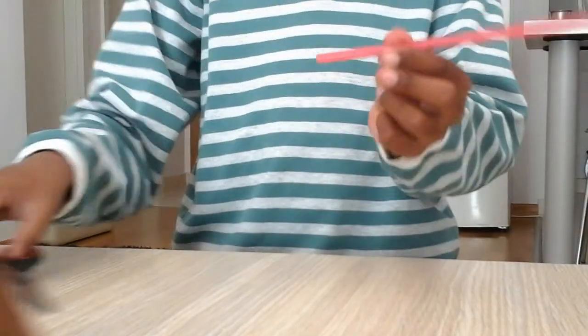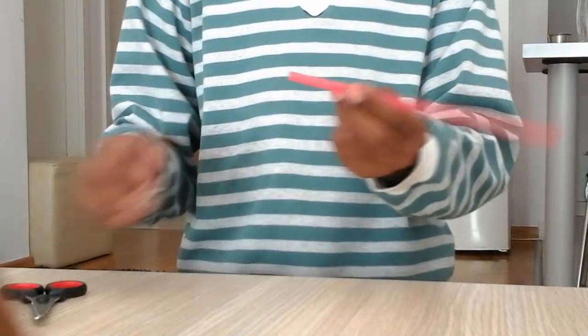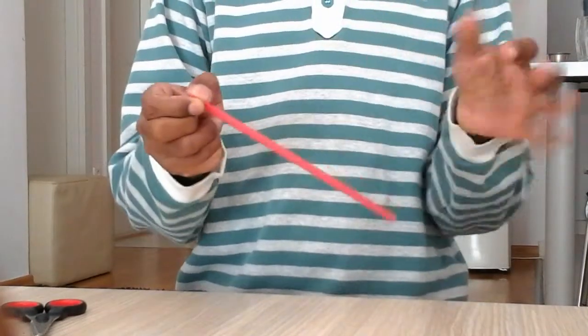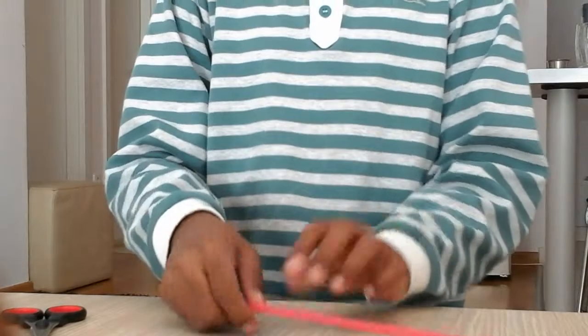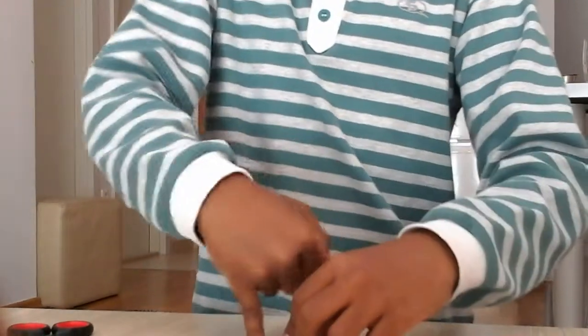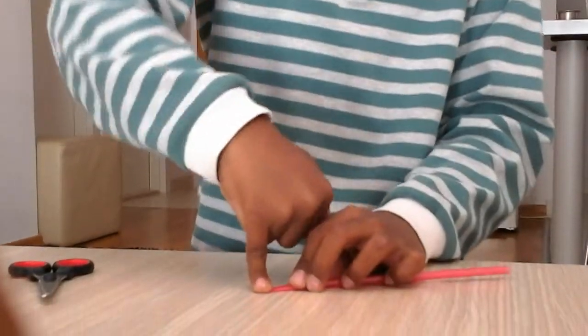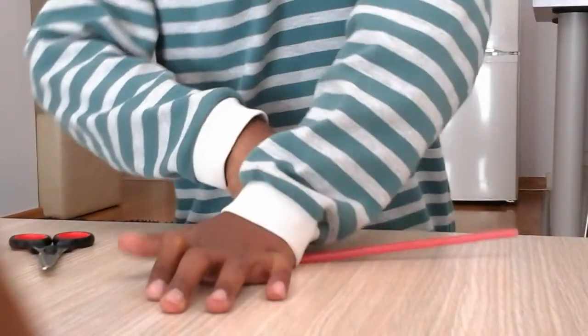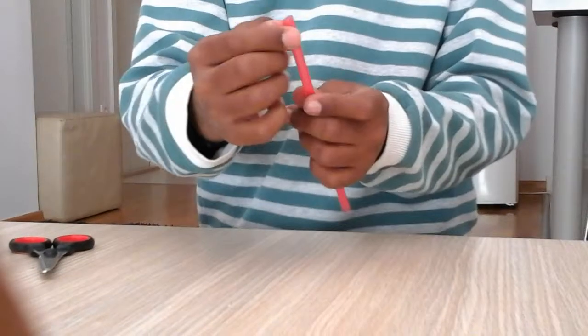So after cutting it out, it should just look like this. So now, this is the main part, so flatten it up to your finger, the pointy one, like this and now you will get a shape like this.